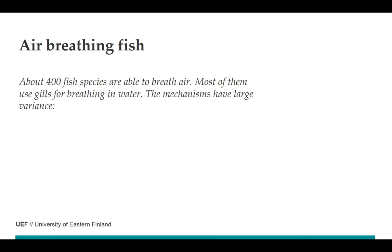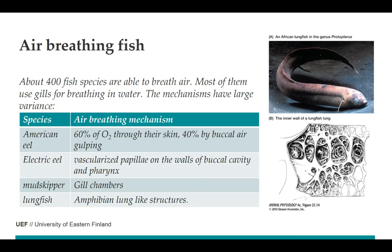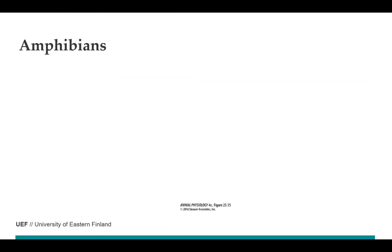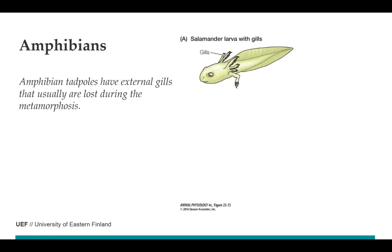Besides regular fish, about 400 species are air-breathing fish. Most still have gills for breathing in water, but there is much variation: some breathe through the skin or use buccal air gobbling — swallowing air. They can have vascularized papillae in the buccal cavity, use gill chambers, or in some cases have amphibian-like lung structures as in lungfish. This leads us to amphibians: tadpoles have gills, but these are external gills, different from fish gills, and they are usually lost during metamorphosis — though not always.